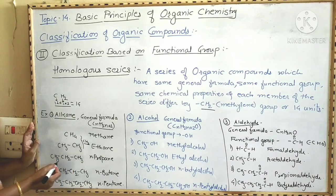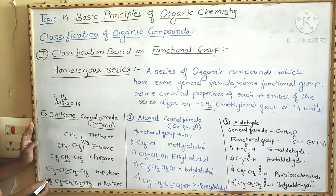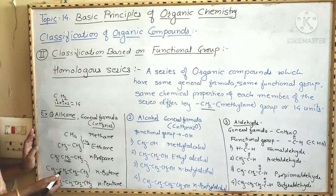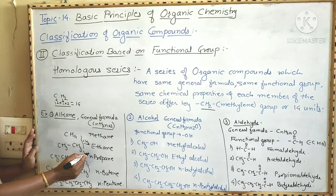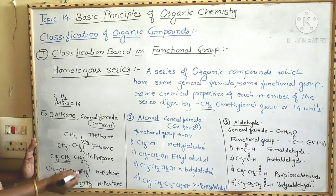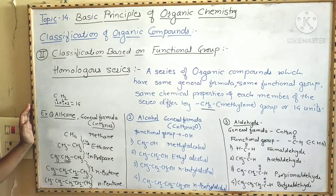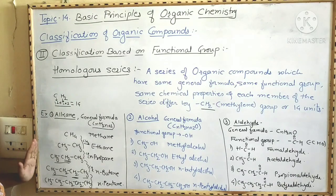Look at the third member, propane: CH3CH2CH3. In ethane there is CH3-CH3, and in propane one CH2 is added in between — so it differs by a CH2 group. Comparing n-propane and n-butane: n-butane has one extra CH2 group compared to n-propane. Each successive member of the homologous series of alkanes differs by a CH2 or methylene group. This is the homologous series of alkanes.